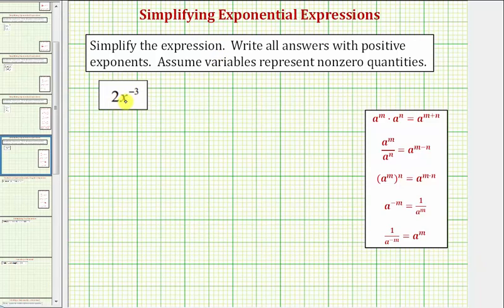We want to simplify the expression 2x raised to the power of negative three. This is not considered simplified because we have x raised to the power of negative three, and we're asked to write all answers with positive exponents.